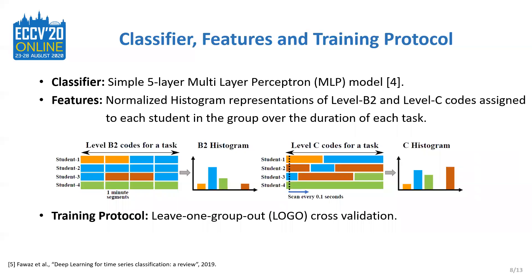For our experiments, we used a simple 5-layer multi-layer perceptron model. Our model's design was based on Fawaz et al.'s paper that compares the performance of different neural network models on various one-dimensional datasets. For features, we compute normalized histogram representations of the Level B2 and Level C codes that were assigned to each student in the group for the duration of each task. Level B2 codes consist of fixed-length 1-minute segments, making it easier to compute the histogram representation. However, Level C contains variable-length segments, so to compute the normalized histogram for Level C, we scan and compile all the codes observed after every 0.1 seconds.